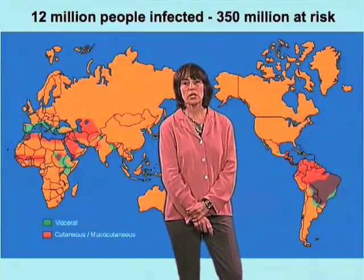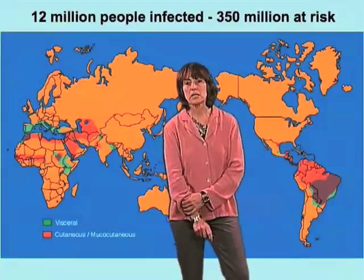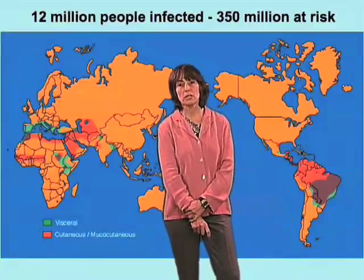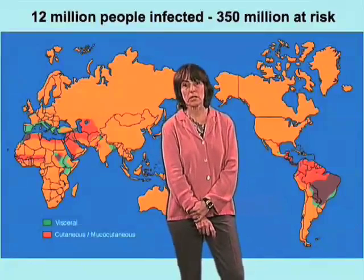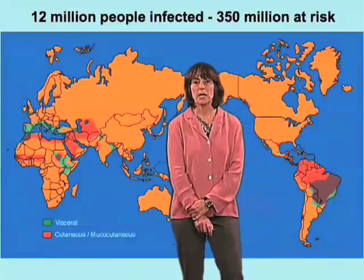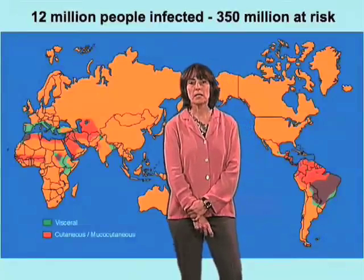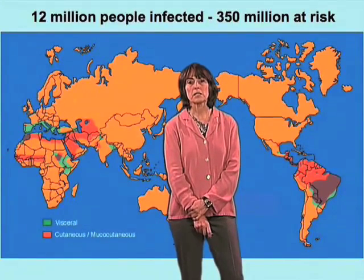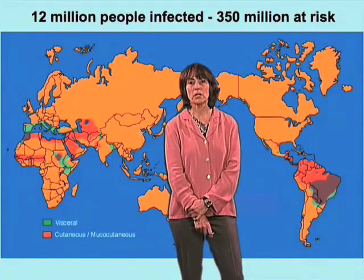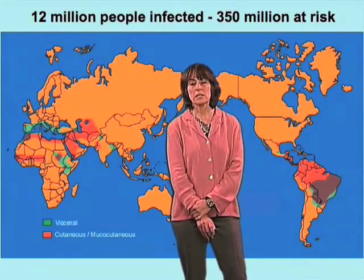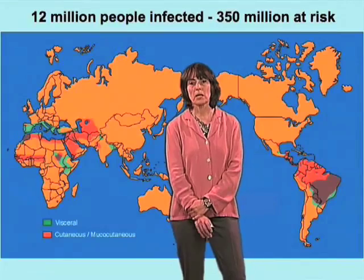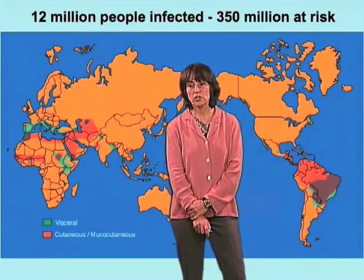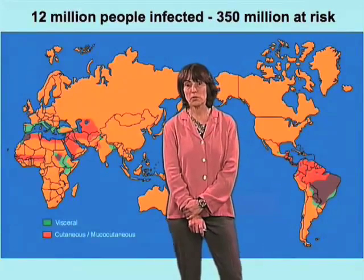Similar to Chagas disease, Leishmaniasis is also largely a disease of poverty. It is mostly found in underdeveloped regions of the world, but it has some characteristics that actually make it very serious, in the sense that development is proving not to be sufficient to stop transmission.